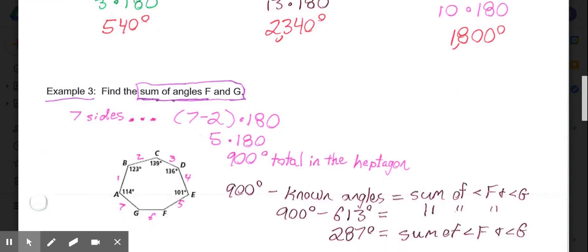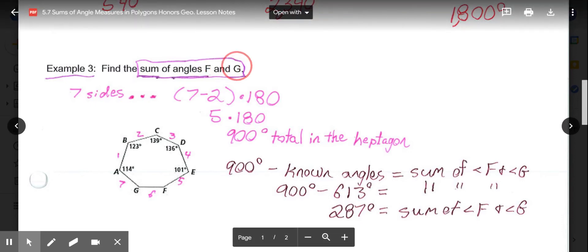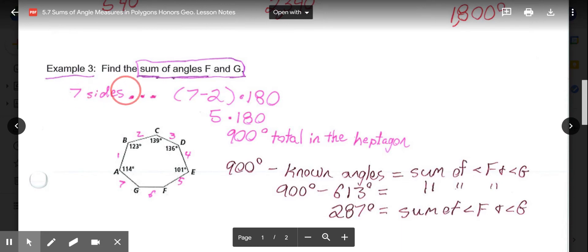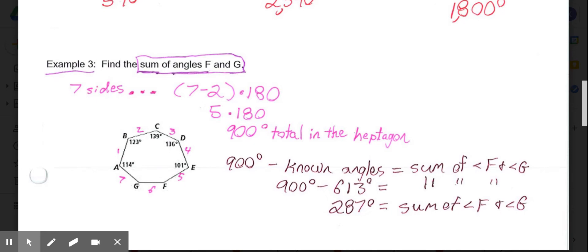Then, in example three, it asks us to find the sum of angles F and G. We're just finding the sum of these two angles in the end. Right away, I know my figure has seven sides. It's a heptagon. To figure out the total angle measure, 7 minus 2 is 5. 5 times 180 tells me my heptagon should have 900 degrees.